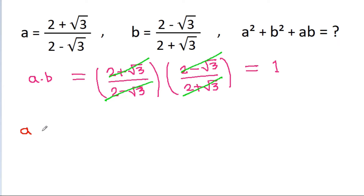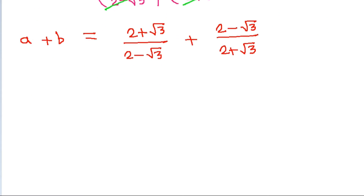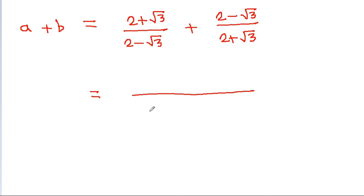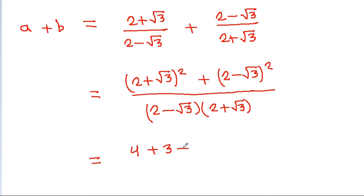And if we add a and b, then it will be equal to (2 + root 3)/(2 - root 3) plus (2 - root 3)/(2 + root 3). Taking (2 - root 3)(2 + root 3) as the LCM, we get (2 + root 3) squared plus (2 - root 3) squared in the numerator. And (2 + root 3) squared expands to 4 + 3 + 4 root 3.